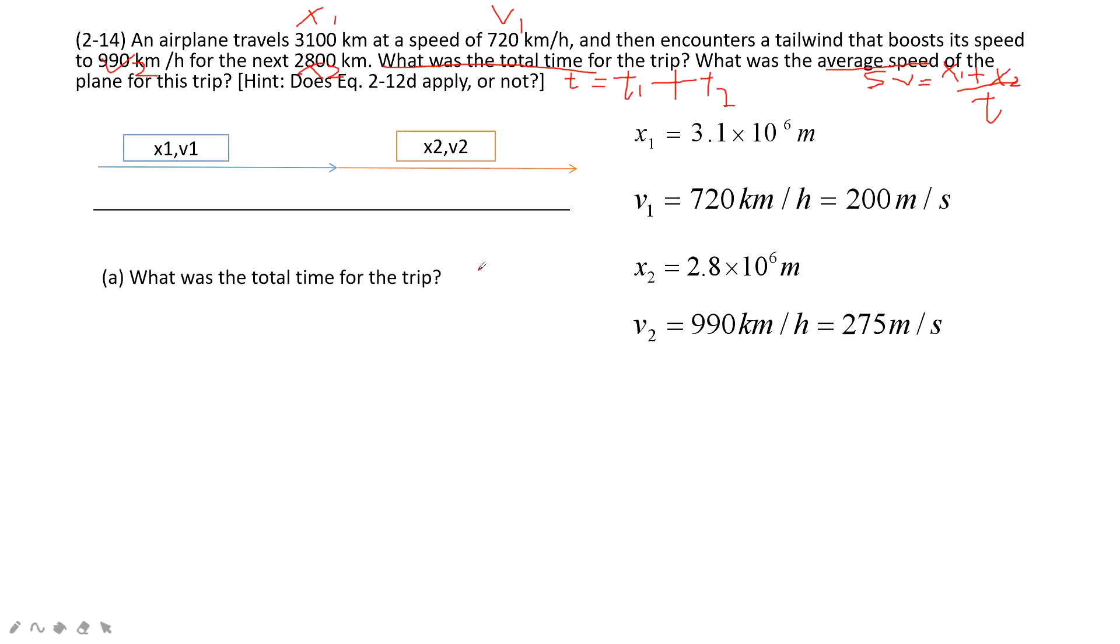And then, first one, we need to find the total time, right? Total time is t1 plus t2. So t1 is x1 divided by v1. T2 is x2 divided by v2. And add these two together to find the total time.